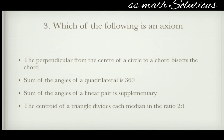Which of the following is an axiom? Options: the perpendicular from the center of a circle to a chord bisects the chord; the sum of angles of a quadrilateral is 360; the sum of angles of a linear pair is supplementary; the centroid of a triangle divides each median in the ratio 2:1. The answer is option 3 — the sum of angles of a linear pair is supplementary, which is an example of an axiom.